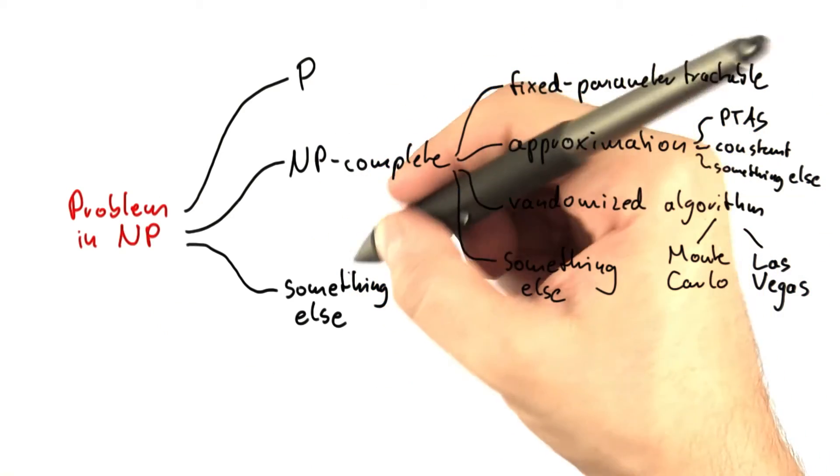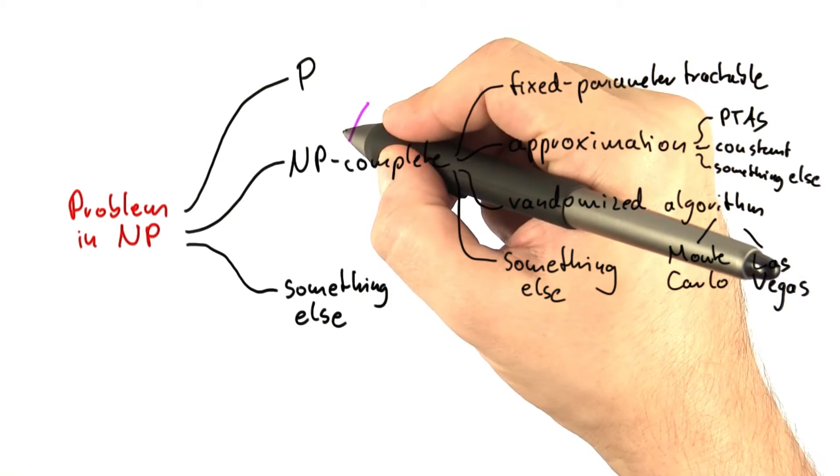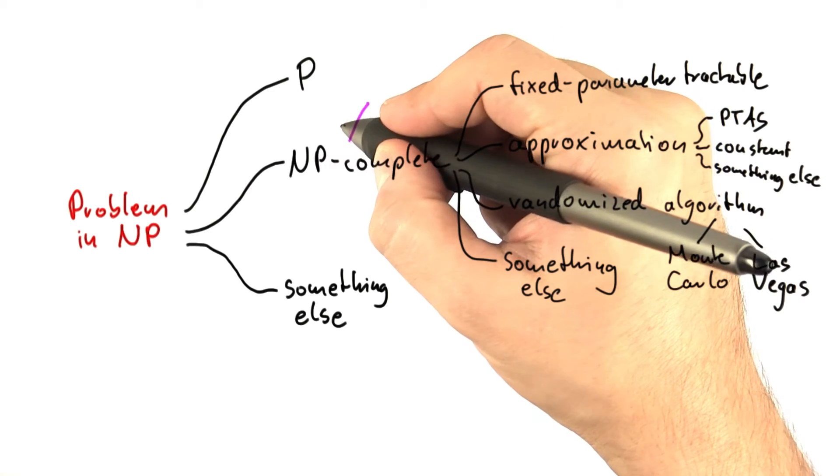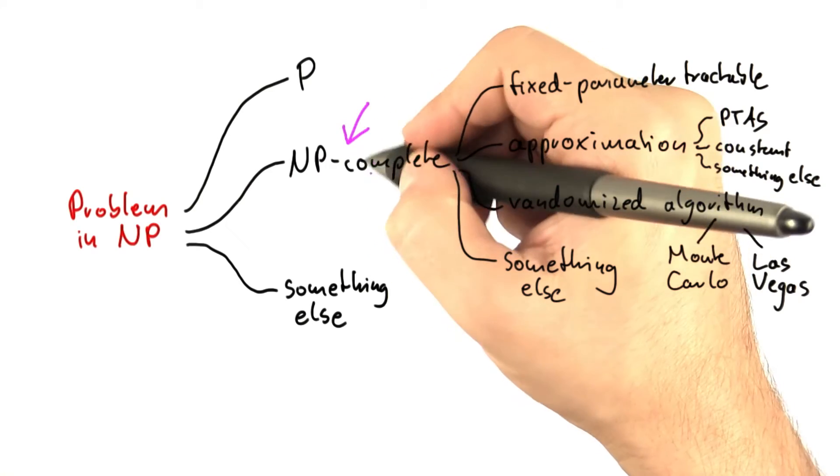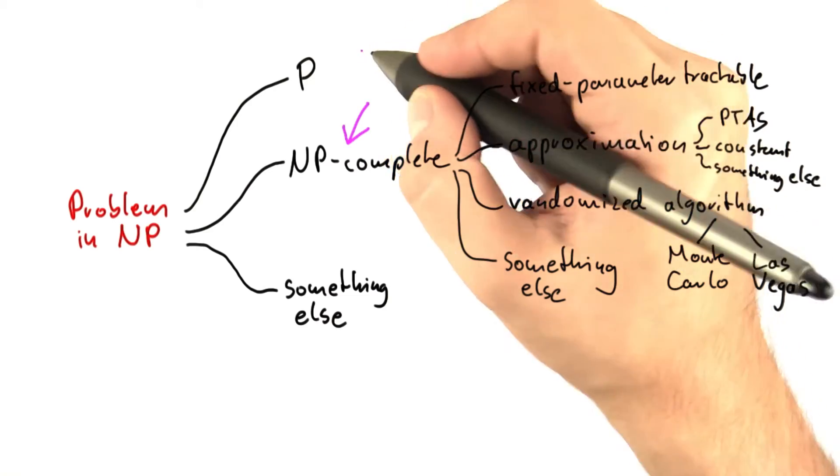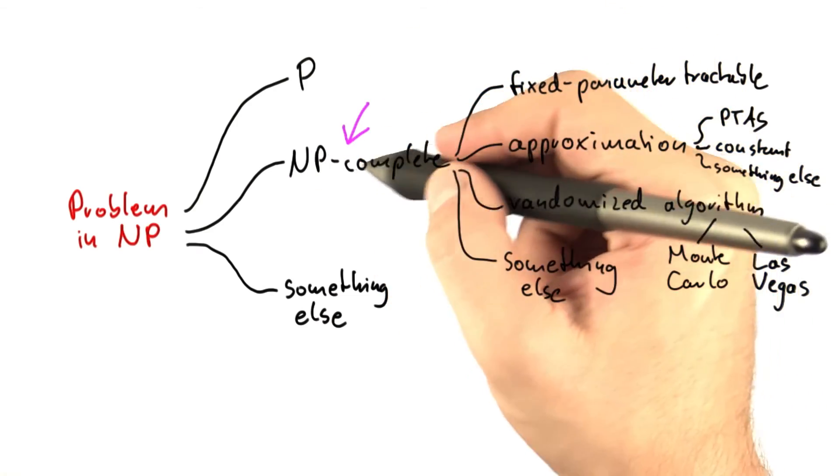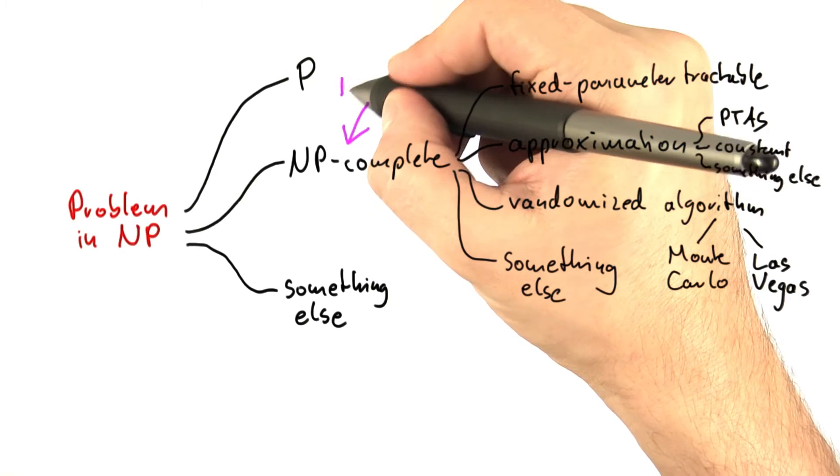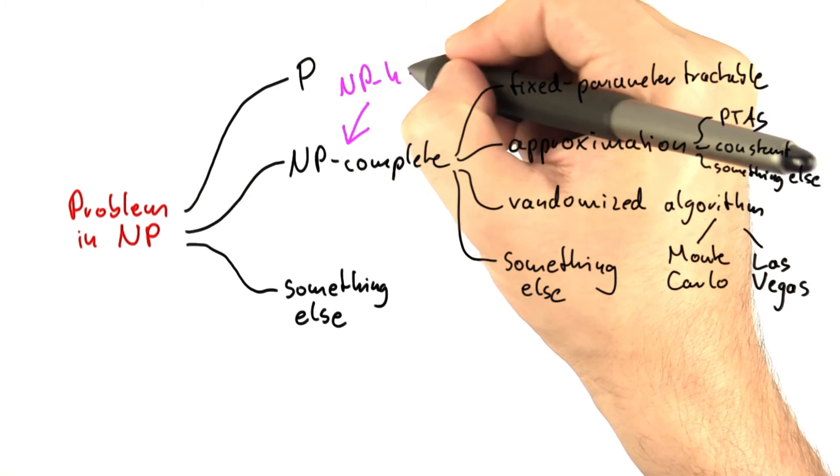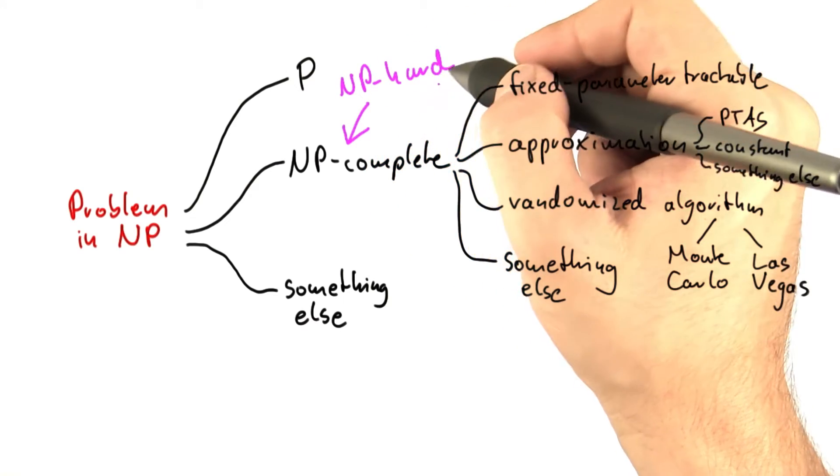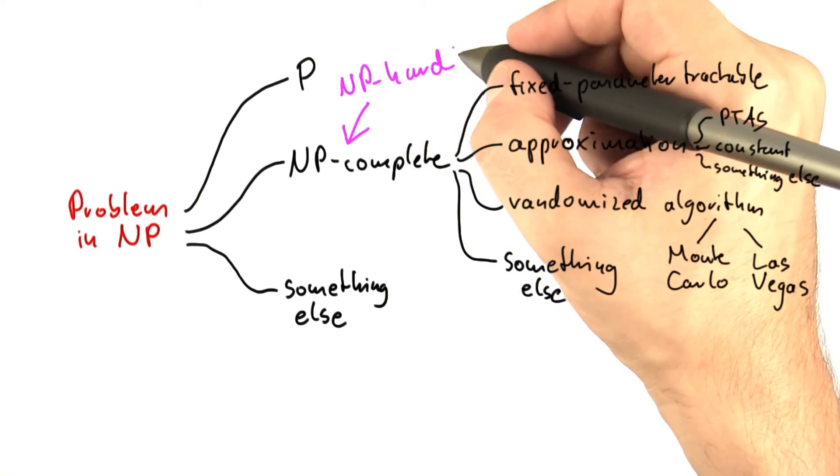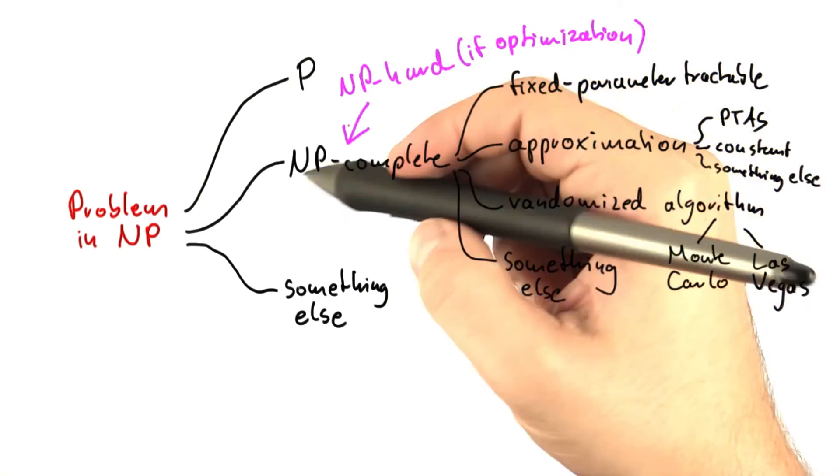Now, one final thing I should mention, there are two notions here, especially if you talk to somebody who has studied theoretical computer science, they will nitpick you about the NP completeness, because NP completeness is technically only defined for decision problems. So, if you're talking about optimization problems, and you want to be very correct, then you should call that problem an NP hard problem.